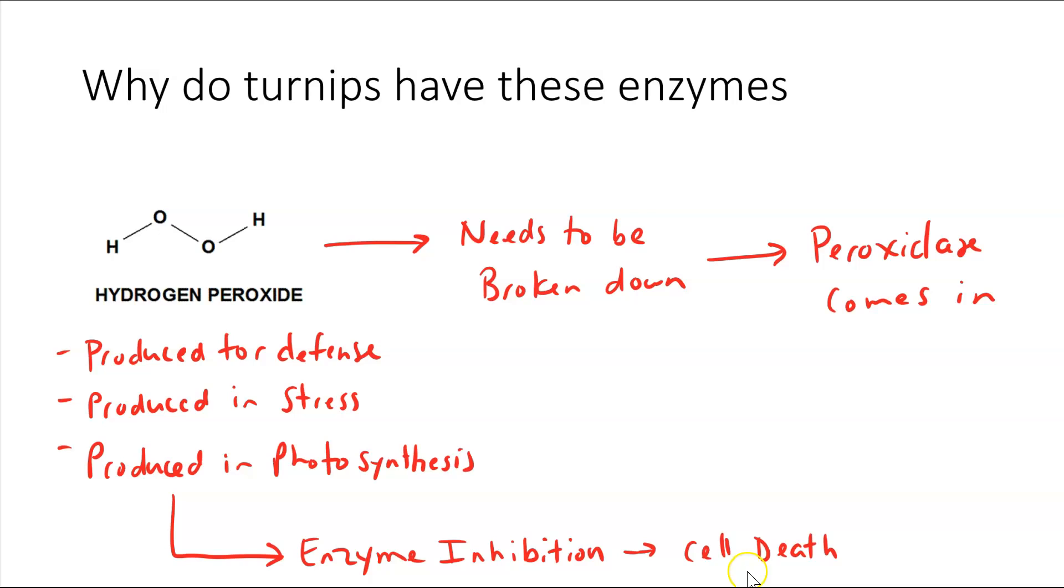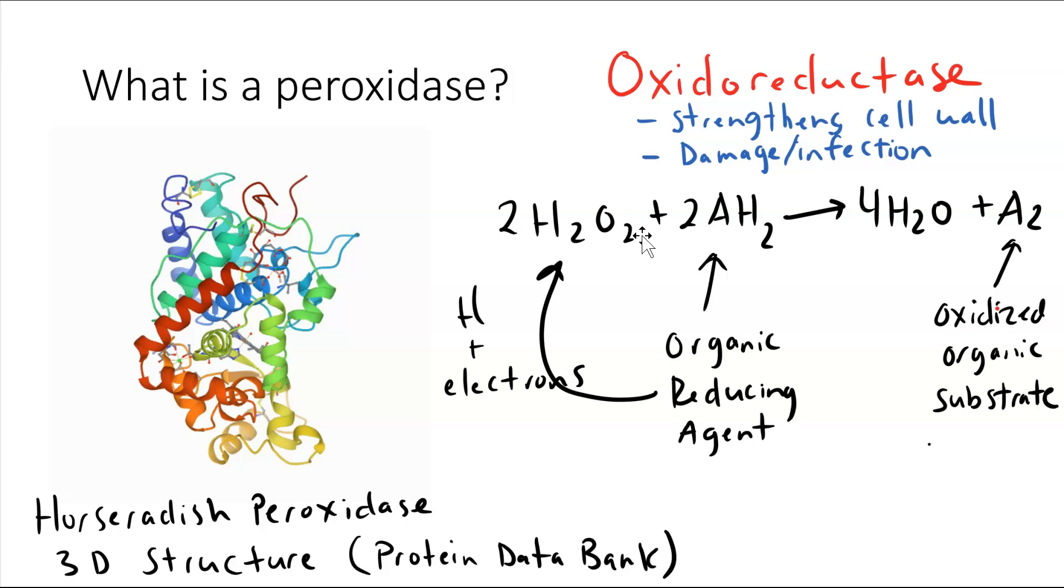If it inhibits those enzymes, it could eventually lead to cell death. So, hydrogen peroxide then needs to be broken down when not in use or when its levels are too high. So, that's where peroxidase comes in. If you recall from the previous chemical reaction, peroxidase can come in and basically reduce hydrogen peroxide in our chemical reaction, breaking it down.